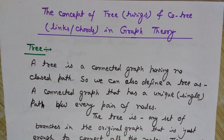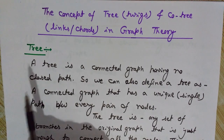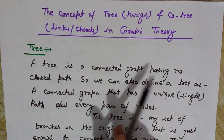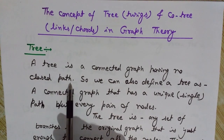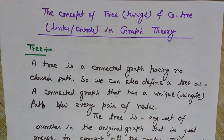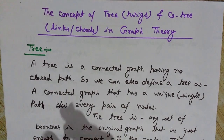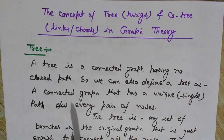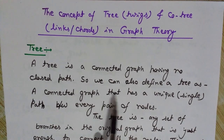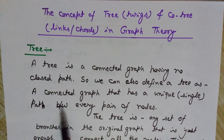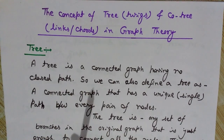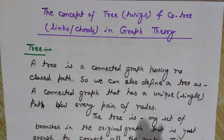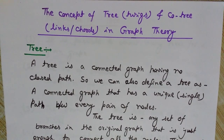What is a tree? A tree is a connected graph having no closed path. We can also define a tree as a connected graph that has a unique or single path between every pair of nodes. There are multiple definitions for a tree, and I will explain them all with an example.